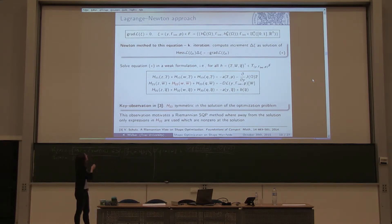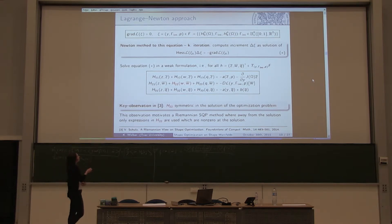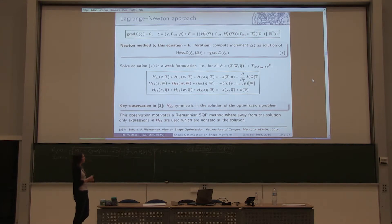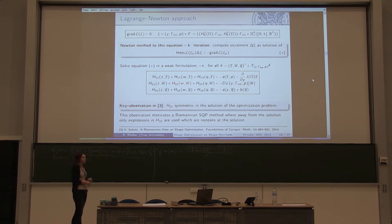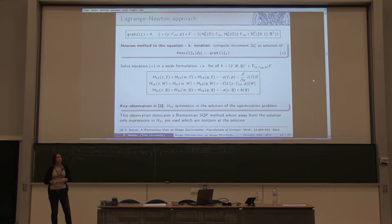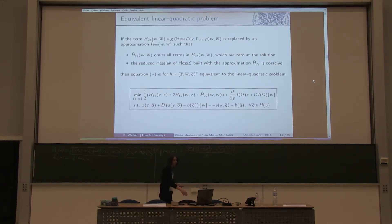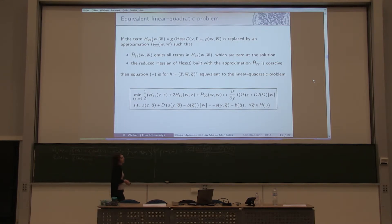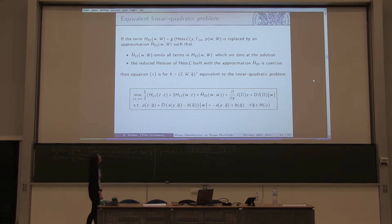We apply a Newton method to the necessary first-order optimality conditions, computing the increment as the solution of equation star. From a practical viewpoint, it is easier to solve this in weak formulation, meaning those equations must hold for all tangential vectors H. A key observation from Volker Schulz's publication shows that the term H22 is symmetric at the solution of our optimization problem, motivating the Riemannian SQP method. If we replace H22 by an approximation that omits terms which are zero at the solution and the reduced Hessian is coercive, then equation star is equivalent to a QP.